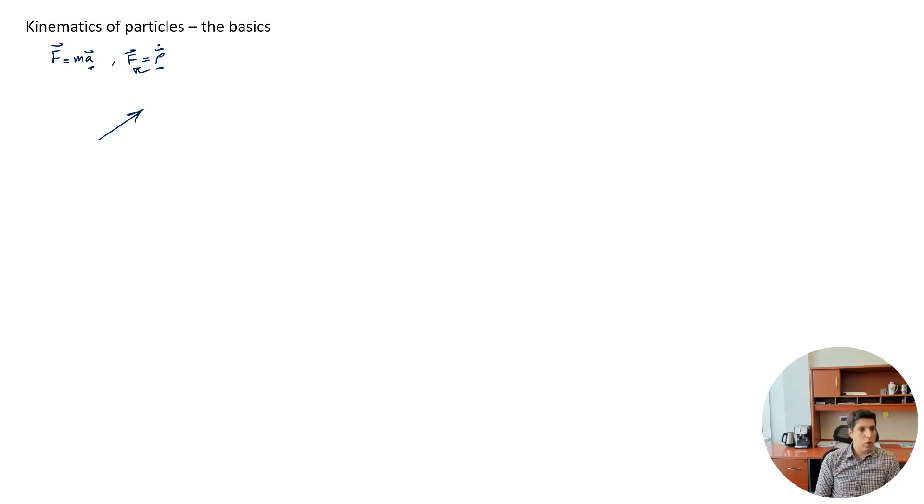So what we can do is have a vector and view it in a coordinate frame. Like this. So E1, E2, E3. And the projection of this vector onto the coordinate frame is this.